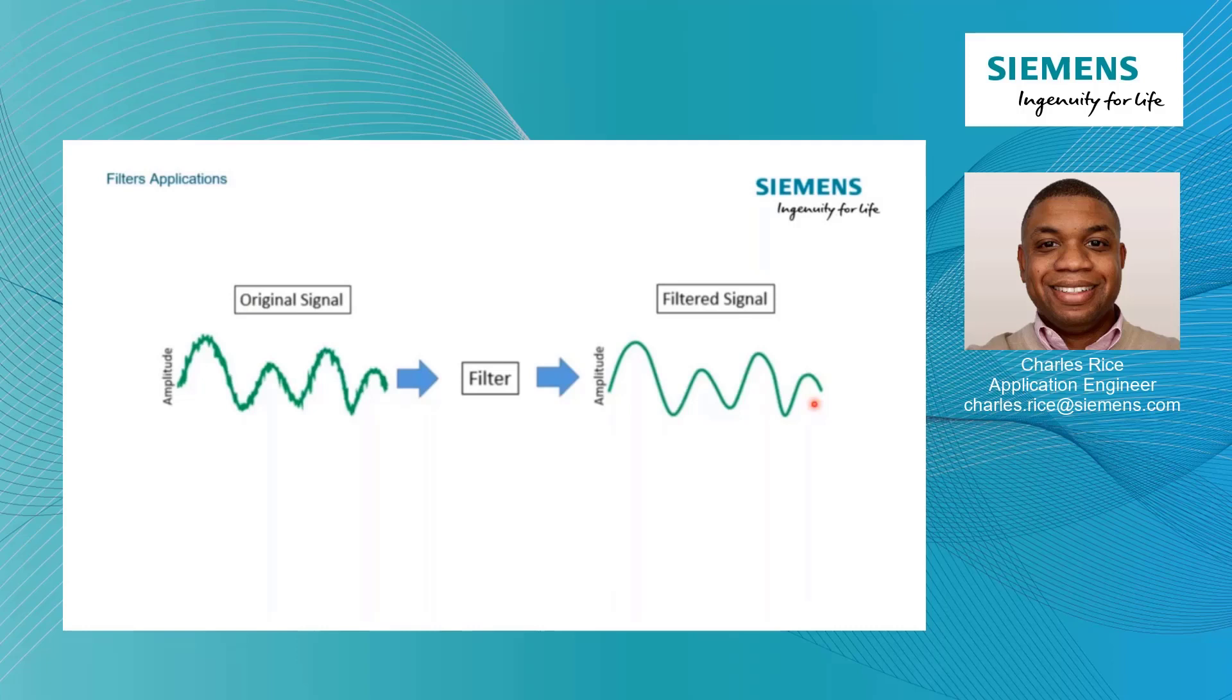There's a lot of different applications for filters. They have a variety of uses. Probably one of the most common is removing undesired frequency content. If we look at this signal here, we could say maybe there's some noise on top of the signal that we're measuring. So we could use a filter to remove that noise. Signal cleanup is a common filter application.